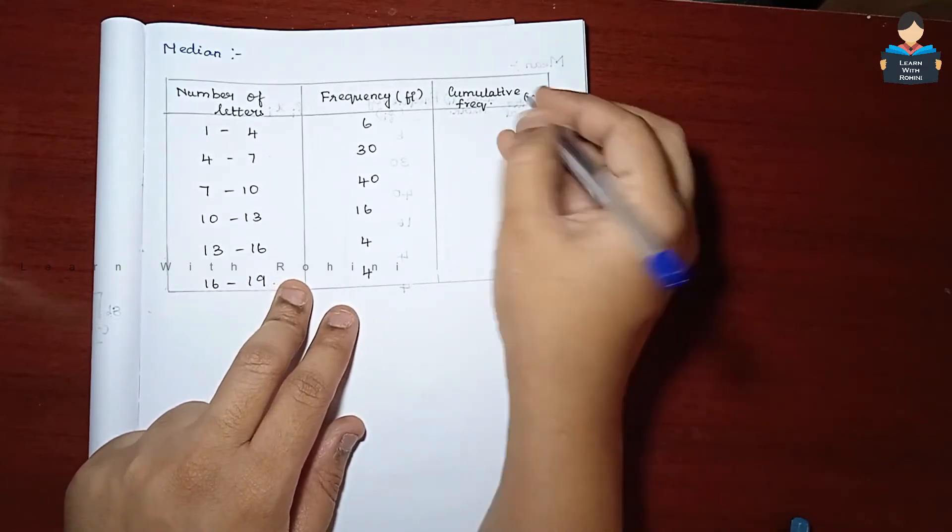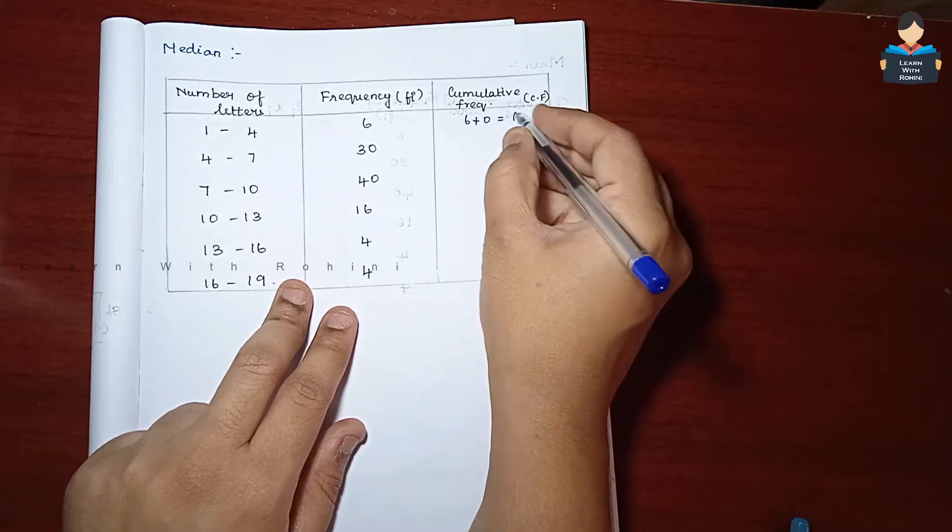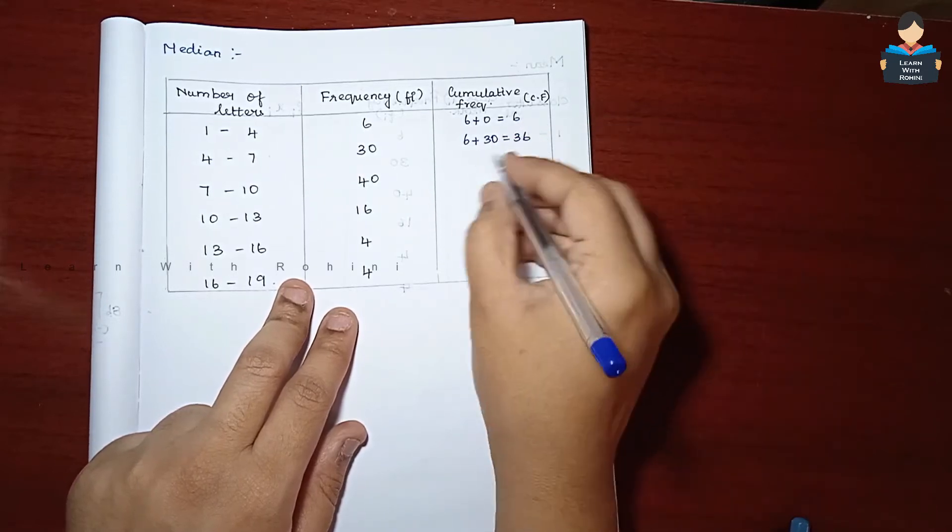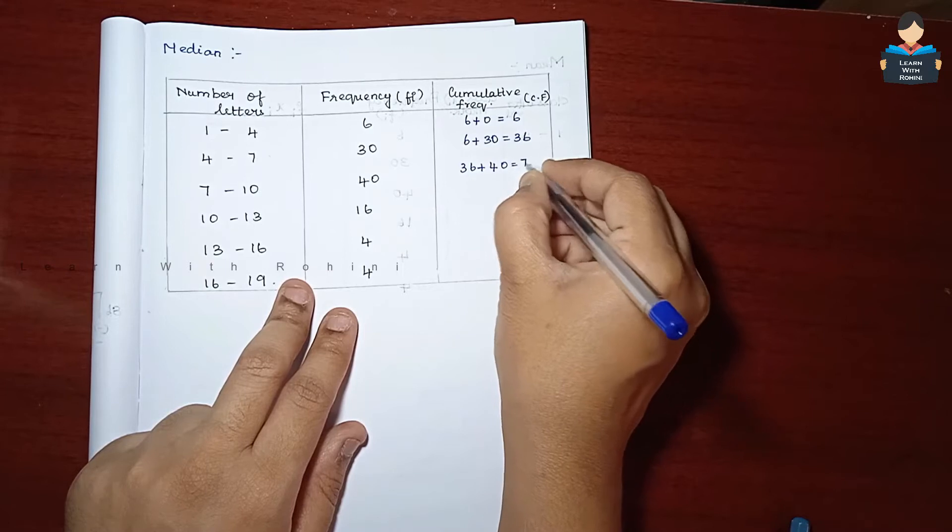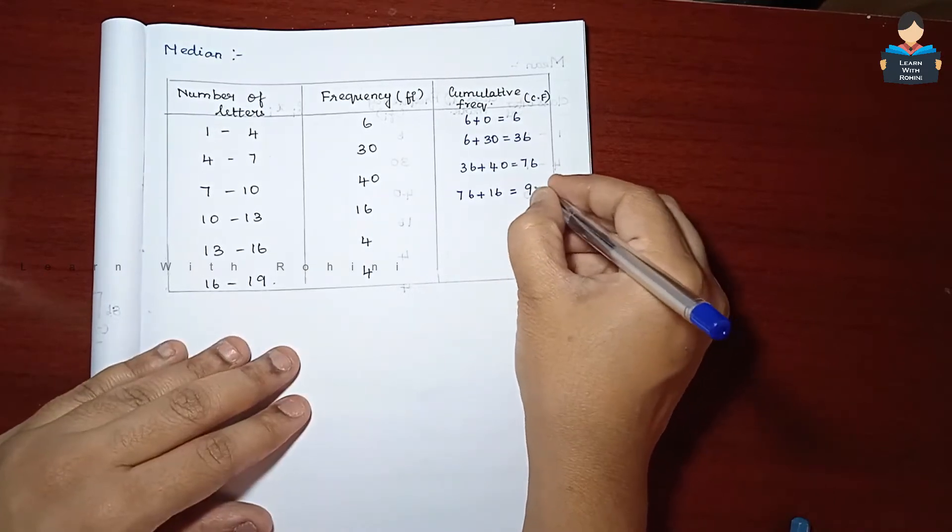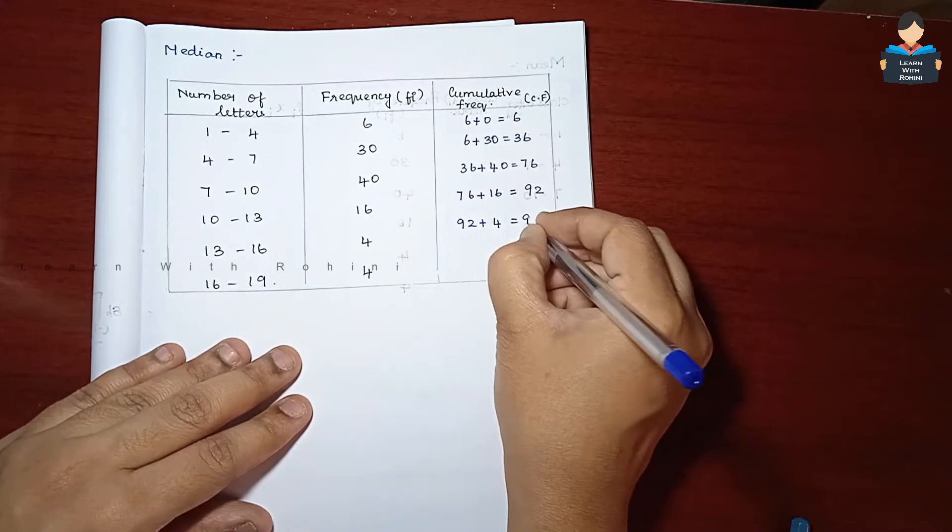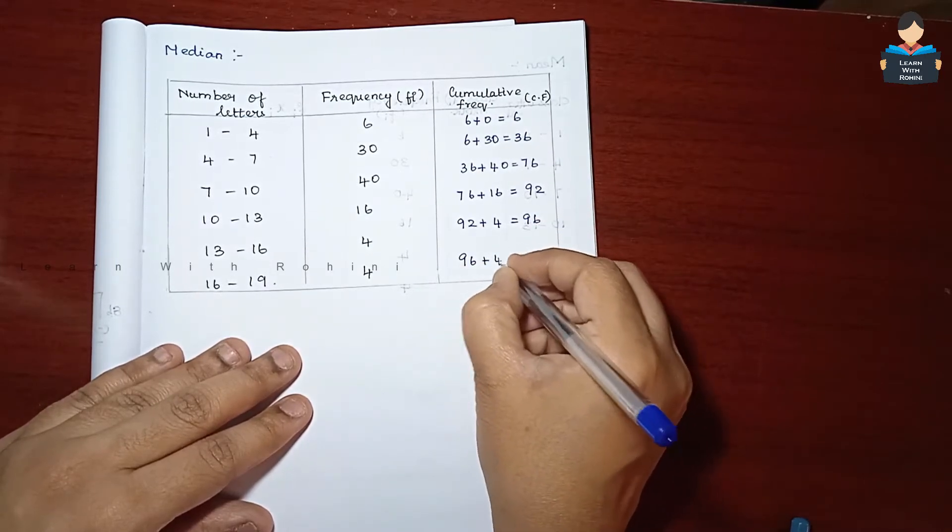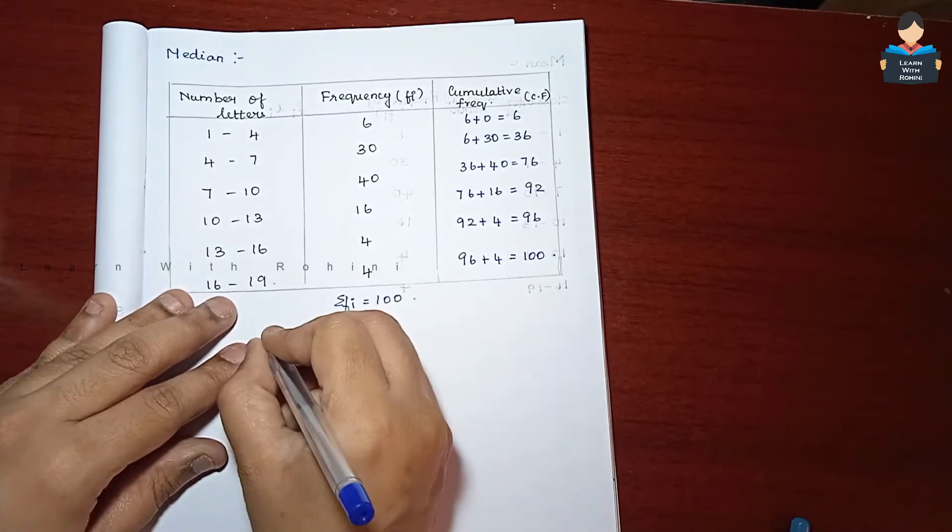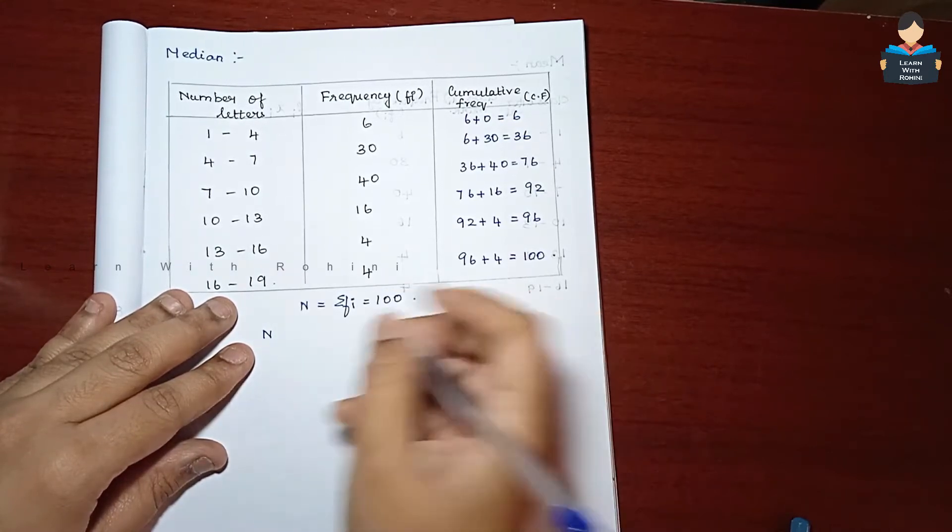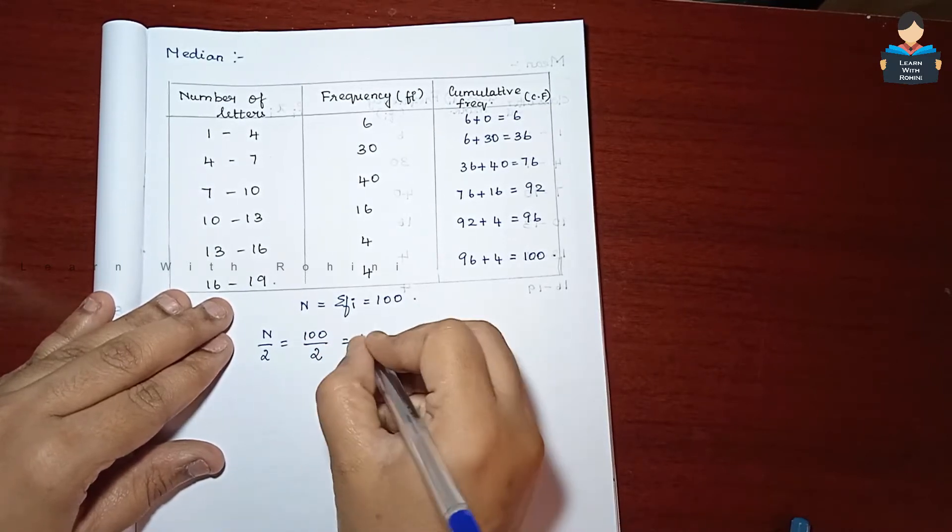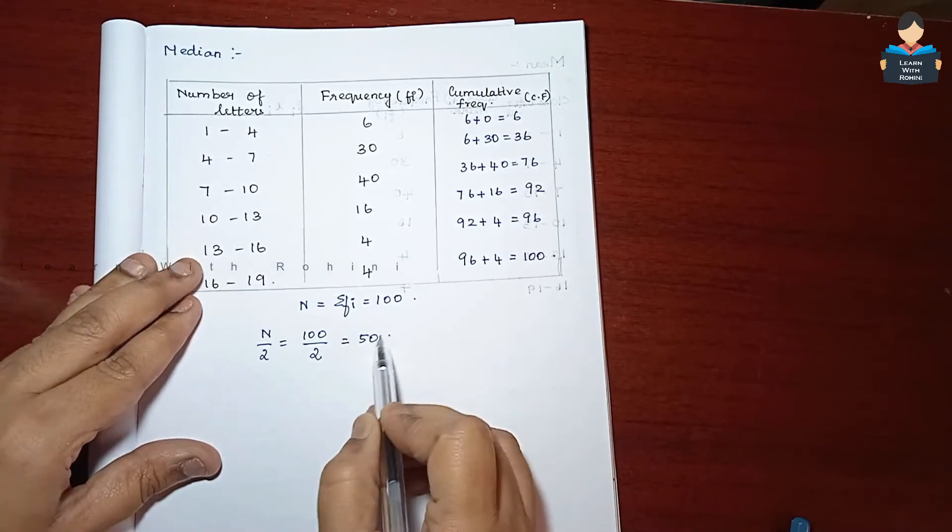36 plus 40 equals 76. 76 plus 16 equals 92. 92 plus 4 equals 96. 96 plus 4 equals 100. So sigma fi value is 100, which is also equal to n. So n by 2 equals 100 by 2 equals 50. Now n by 2 value is 50.